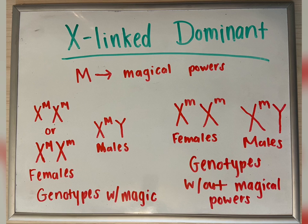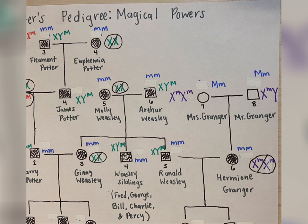Next, X-linked dominant traits are genes found on the X chromosome and are the observed trait when crossed. Looking at individuals 2-7 and 2-8, they both don't have the trait, giving them the following genotypes: X-little m, X-little m, and X-little m-Y. Their daughter, individual 3-6, has the trait, so she would need to have at least one X with a big M. However, this is not possible with her parents' genotypes, since they only have little m's. This shows X-linked dominant is not a consistent mode of inheritance.